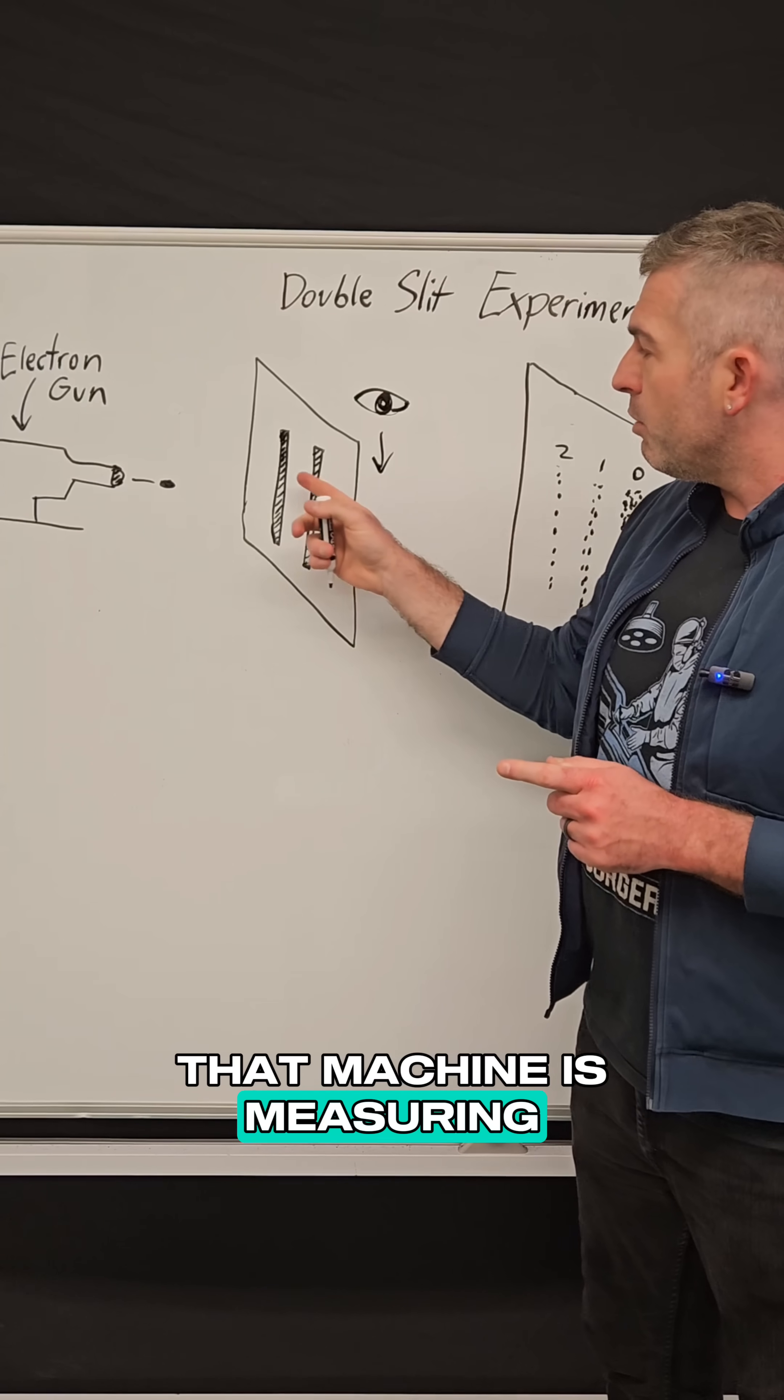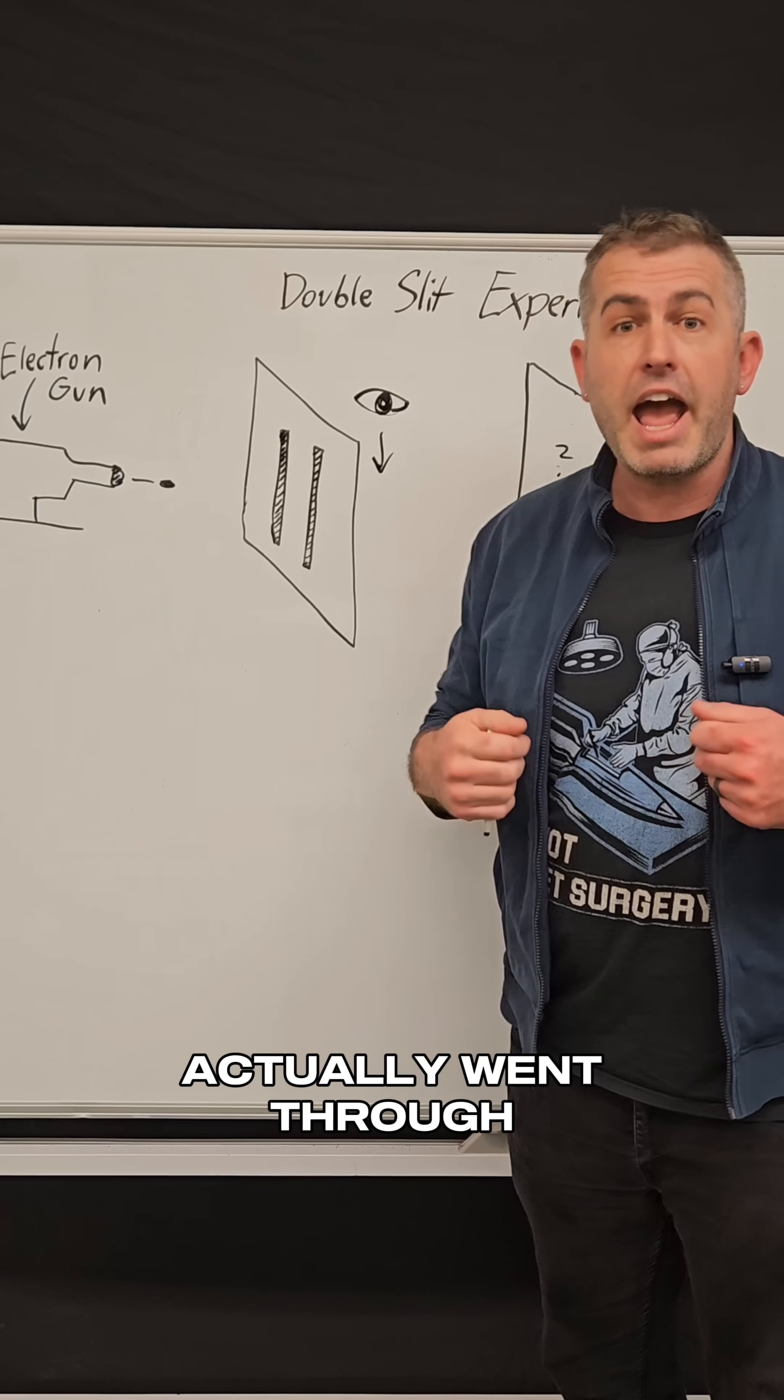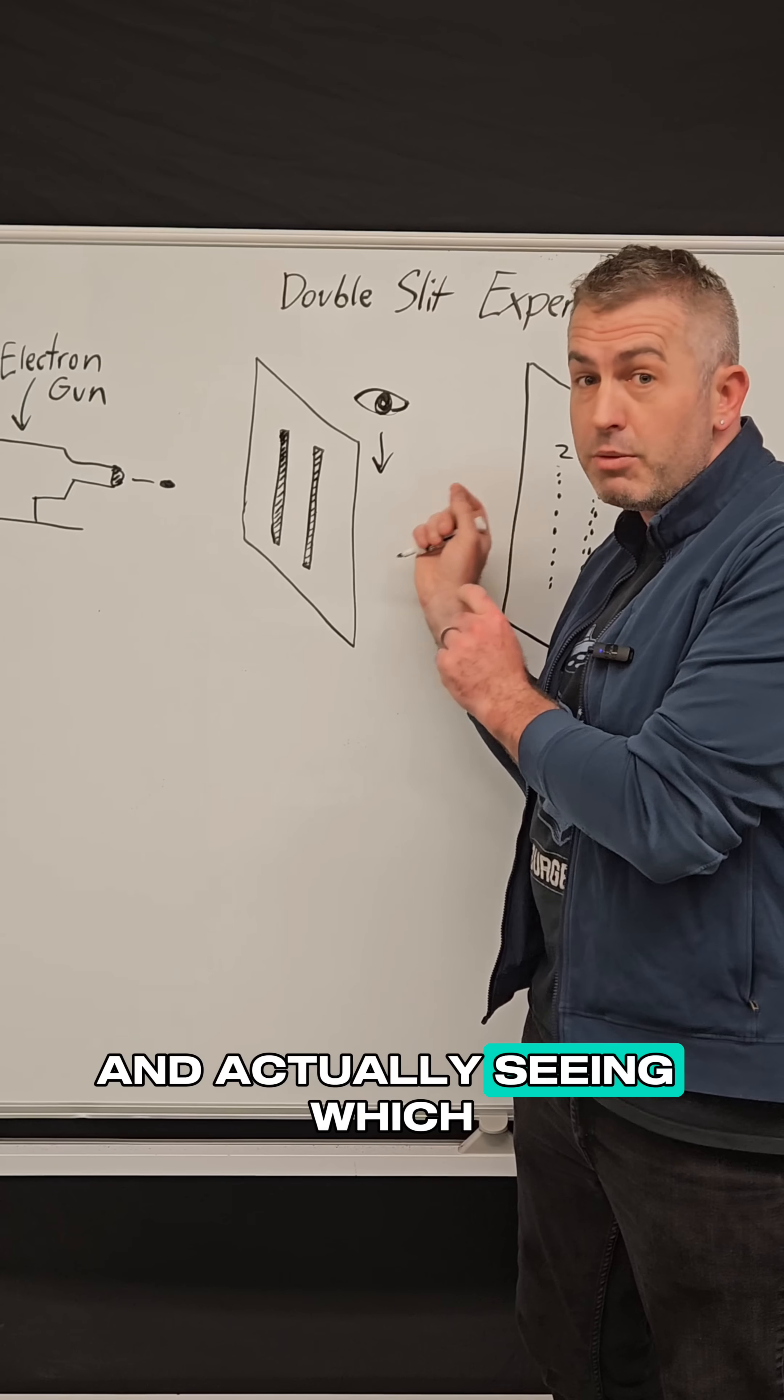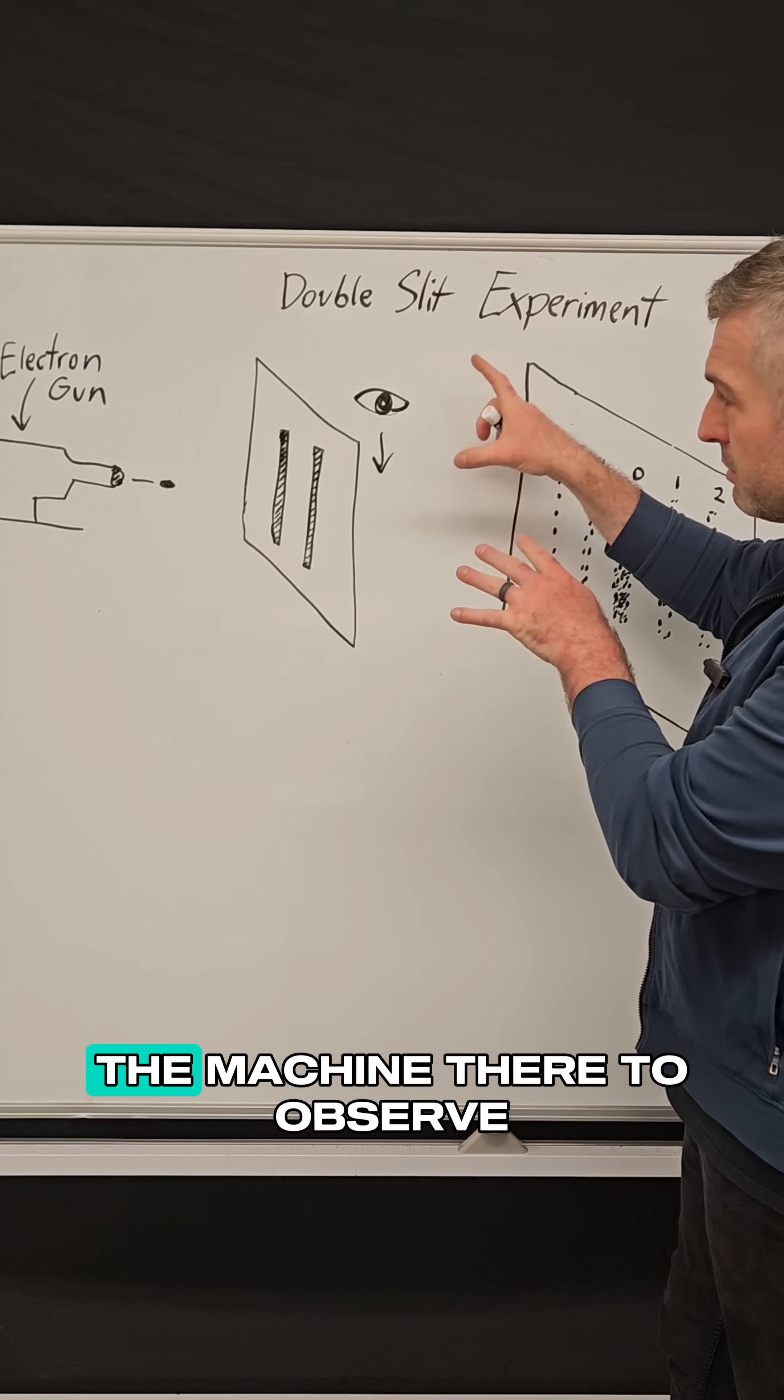And that machine is measuring which hole the electron actually went through. So rather than letting it just be random, we're verifying and actually seeing which hole it goes through. So once we put the machine there to observe...